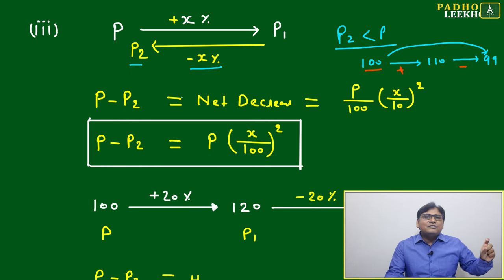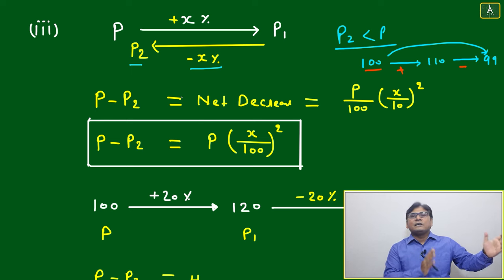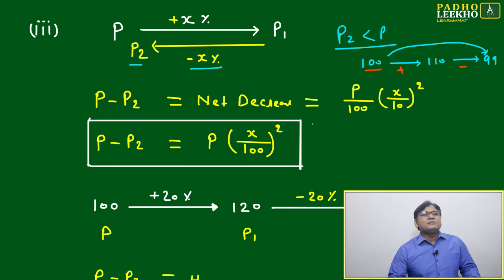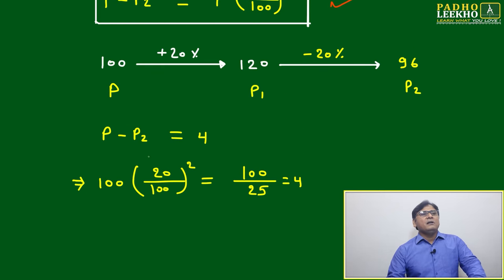Then P minus P2 will be equal to net decrease. P minus P2 will be this one. You can apply direct formula, this one P into x by 100 square. This just you have seen like 100, 20 percent increase, 120, 20 percent decrease, it will become 96 finally.